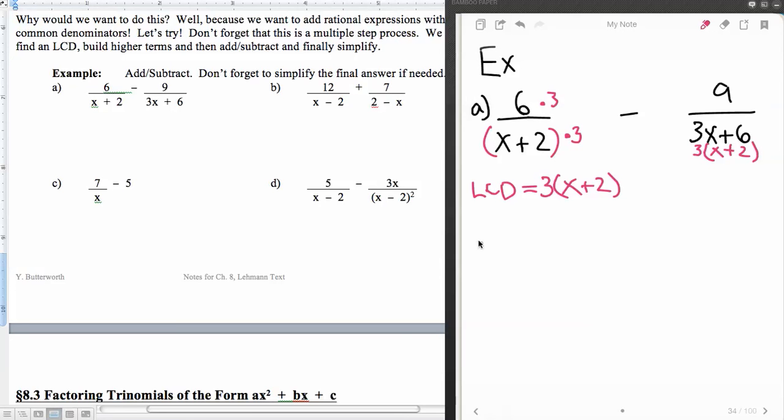So this is going to be equal to 3 times 6, which is 18, minus 9, all over my least common denominator of 3 times x plus 2. And you could write just LCD there. And 18 minus 9 is 9 over 3 times x.